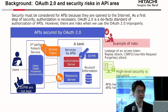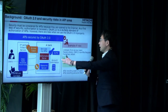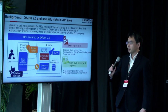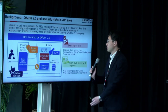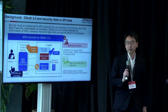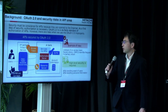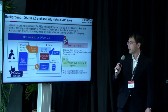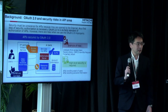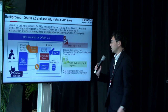OAuth 2.0 is a de facto standard for authorization. This figure shows a simplified model of OAuth 2.0. A bank is opening its API to third-party fintech. To access the API from a third party, the client accesses the authorization server. The authorization server authenticates the user and then issues an access token to the client. The client calls the API with the access token, and the resource server verifies it. If verified, the resource server returns the resource, such as balance information.